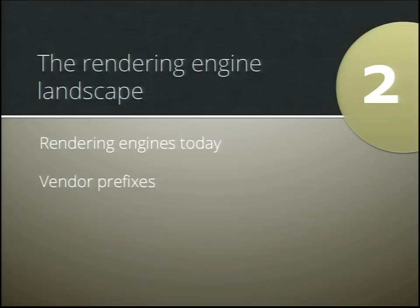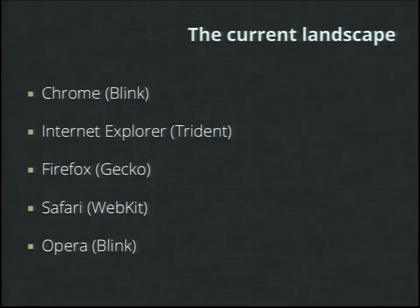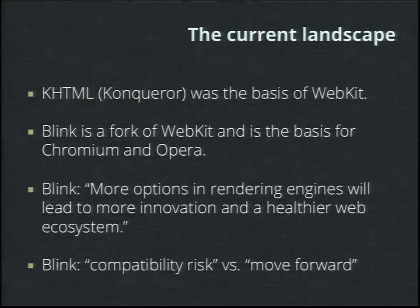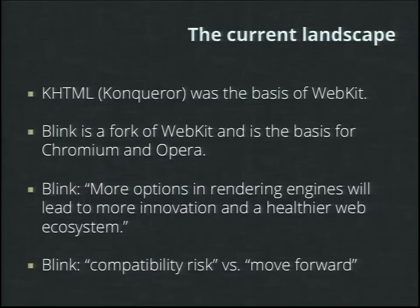What does the rendering engine landscape look like today? Quite recently, Chrome decided to create a fork of WebKit. Chrome and Opera are currently using the Blink rendering engine. IE is using Trident, Firefox is using Gecko, and Safari is using WebKit. KHTML — better known as the Konqueror browser — was the basis of WebKit, and Blink is basically a fork of WebKit currently serving as the engine for Chromium and Opera.